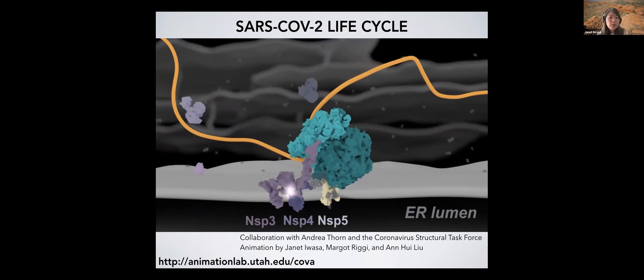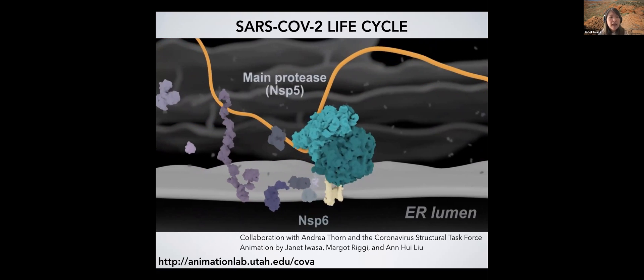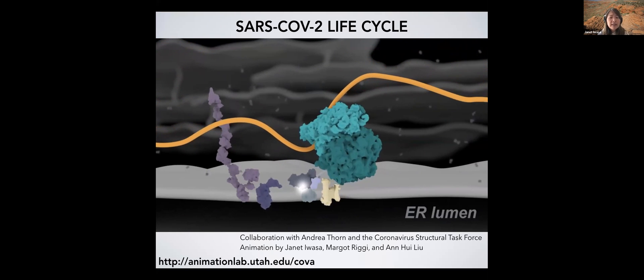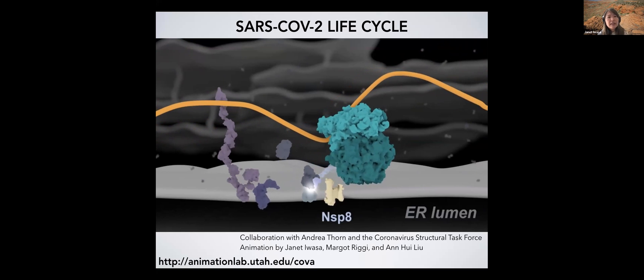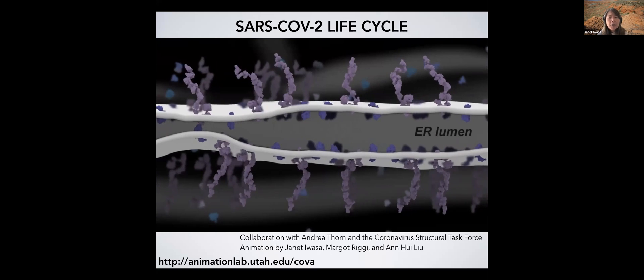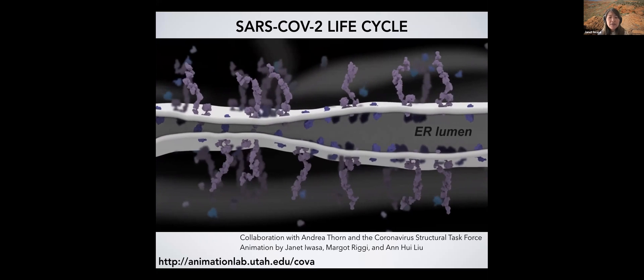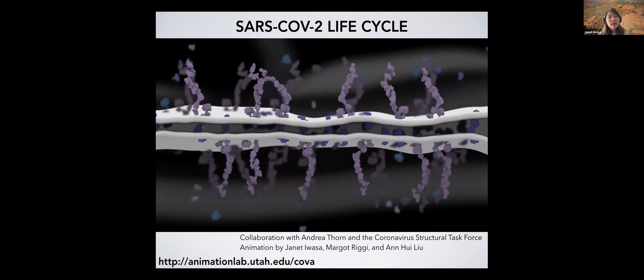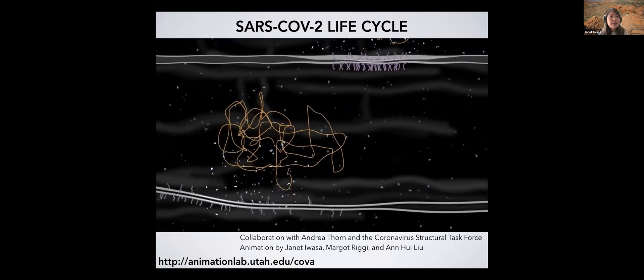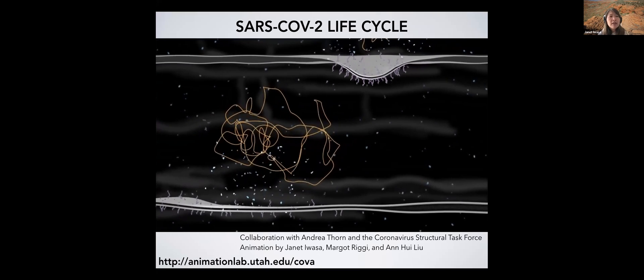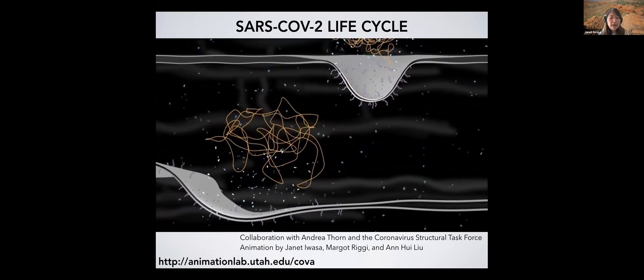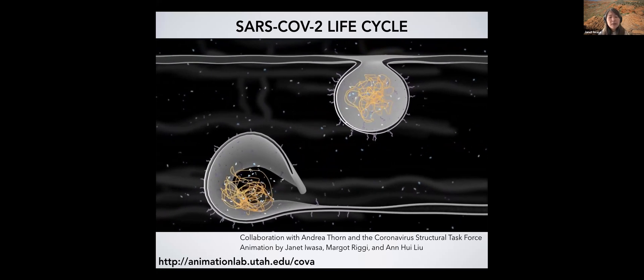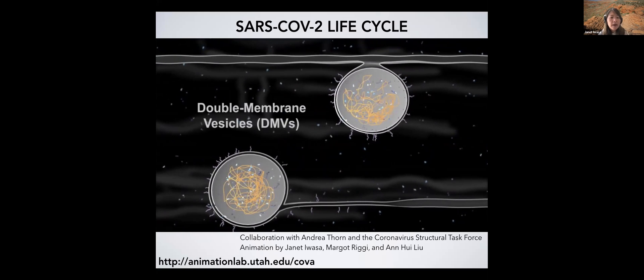Others form a polymerase, which is shown in the next segment of the animation, and others have yet undiscovered functions. So some of these NSPs are thought to mediate these kind of changes in the endoplasmic reticulum membrane that allows for the formation of the double membrane vesicles. So you can see the double membrane vesicles forming here and encapsulating some of the viral RNA within them. And these DMVs are thought to be a really important way that the virus is able to evade the cell's innate immunity mechanisms.